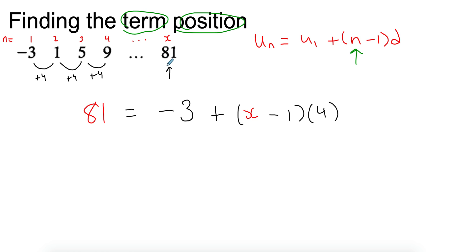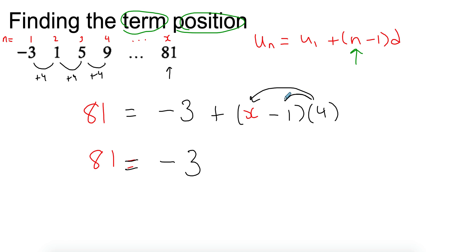Use the information you want to know: the position of 81. Plug in negative 3 as the first term, 4 as the difference, and 81 as the term value. You solve it like a normal equation. Expand the 4 with the bracket — not the 3. I know it seems like a silly caution, but I do see students making that mistake, because we're so used to brackets being on the left side. So these two are being multiplied: I get 4x minus 4.